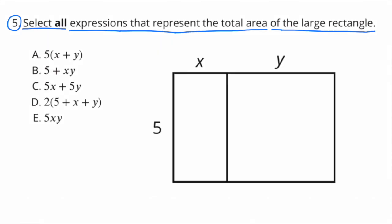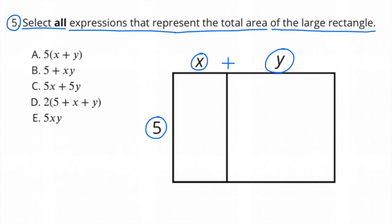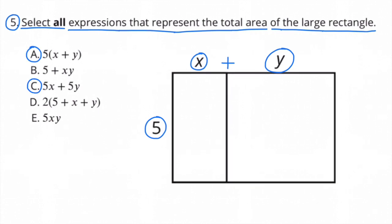Number 5: Select all expressions that represent the total area of the large rectangle. There are actually three rectangles: one smaller rectangle with dimensions 5 by X, a larger rectangle with dimensions 5 by Y, and then the two combined as 5X plus 5Y. These two rectangles combined make one large rectangle. The expressions that represent this large rectangle are 5(X + Y) and 5X + 5Y. So I selected expressions A and C.